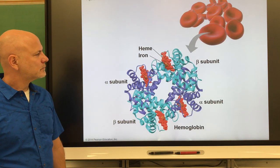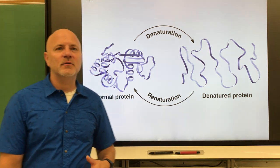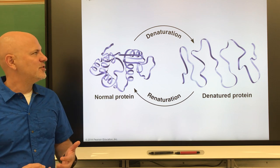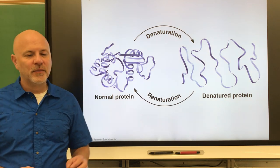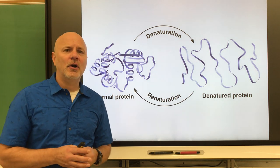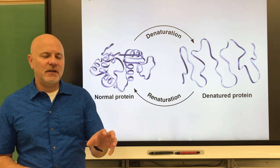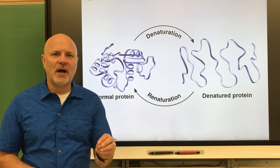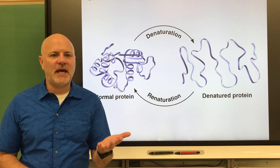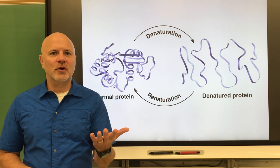We can also denature a protein, which means changing the shape of the molecule, causing it to lose its function. Denaturing occurs when hydrogen bonds are broken. For example, when you crack an egg onto a hot skillet, the egg white (ovalbumin) changes from a clear gelatinous substance to a white solid — that's denaturing. Similarly, lobsters change from greenish-brown to red when cooked, due to denaturing of proteins in their exoskeletons.